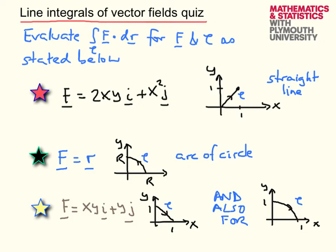In each case, your task is to calculate a line integral of a vector field. F is given explicitly in each case, and the path C is shown graphically here, and in the final case, also here.